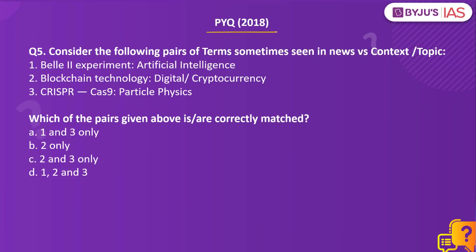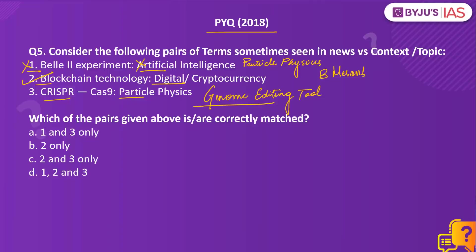Now, a previous year question from Prelims 2018: Consider the following pairs of terms seen in news versus context or topic — 1. Belle 2 experiment: artificial intelligence; 2. Blockchain technology: digital or cryptocurrency; 3. CRISPR-Cas9: particle physics. Which of the pairs is or are correctly matched? The Belle 2 experiment was a particle physics experiment carried out in Japan to study the properties of B-mesons, so it is not related to artificial intelligence, making pair 1 incorrect. Digital or cryptocurrency is based on blockchain technology, making pair 2 correct. CRISPR-Cas9 is a genome editing tool that allows scientists to edit genomes with precision, so it is not in the field of particle physics, making pair 3 incorrect. Therefore, the right answer is Option B, 2 only.